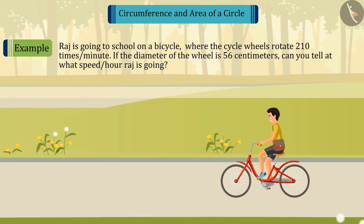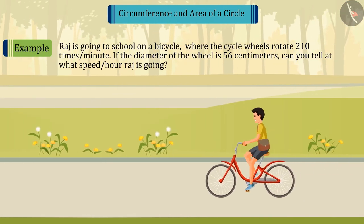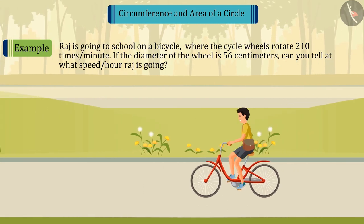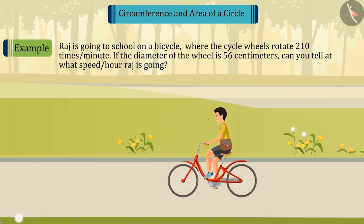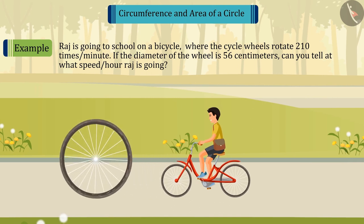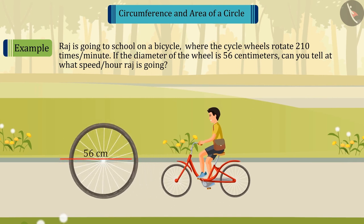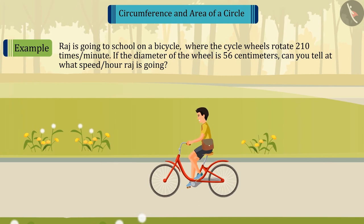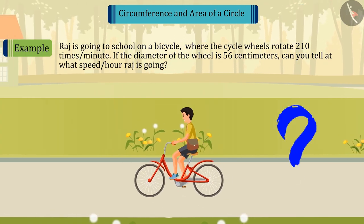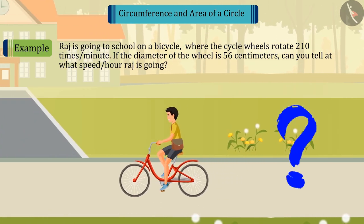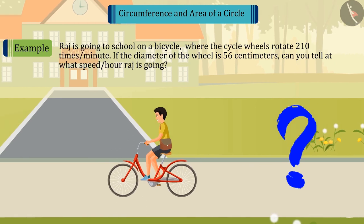Raj is going to school on a bicycle, where the cycle wheels rotate 210 times per minute. If the diameter of the wheel is 56 cm, can you tell at what speed per hour Raj is going? Come, let's try to solve this.